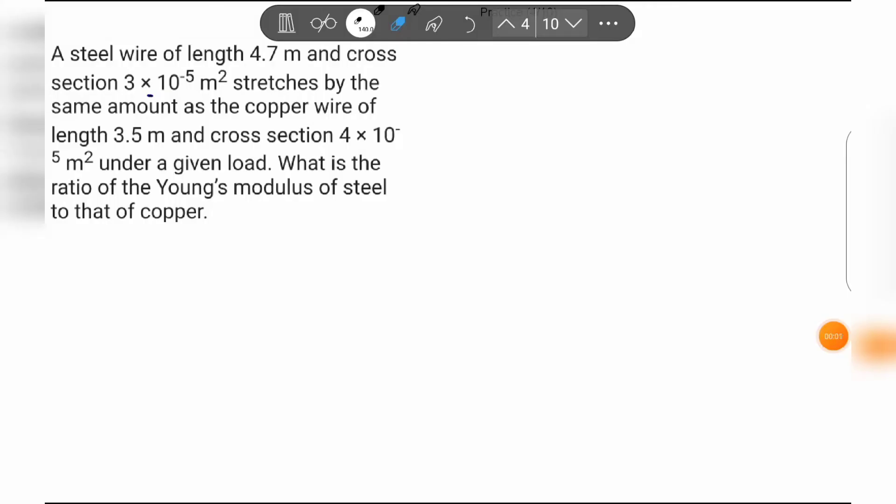Hello everyone, welcome back to Cylindering Plumes. In this video we will discuss a strength of materials related example. We have two materials related to steel and copper, and the question is we need to find out the steel to copper Young's modulus ratio.